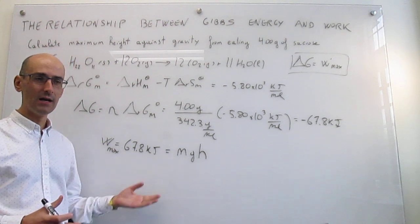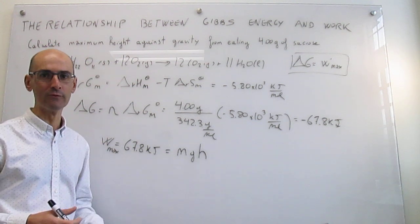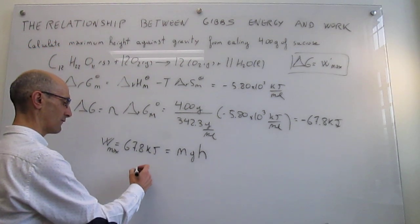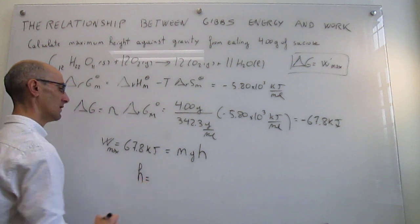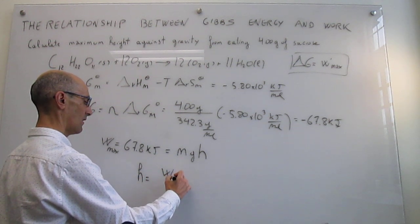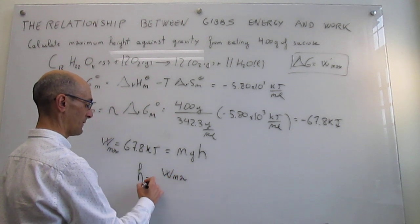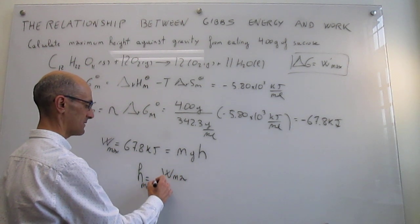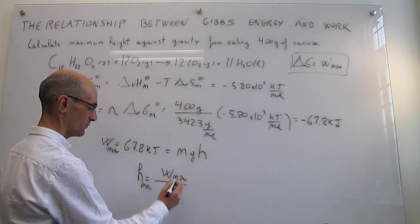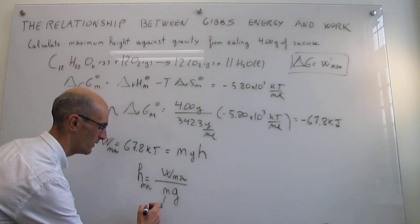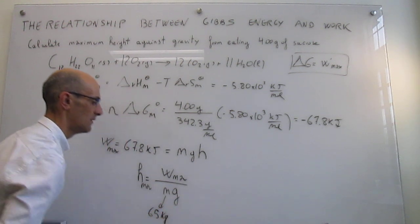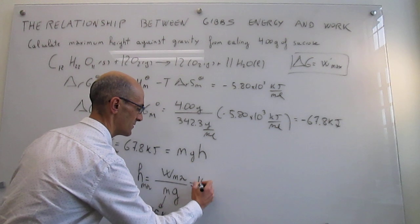We simply have to solve here for the maximum height, which will be your work max divided by mg. Mass you can assume here whatever mass you want, and I'm going to assume 65 kilograms for a regular human. And when you do that, this number turns out to be 106 meters, which is a lot. That's about 300 feet.